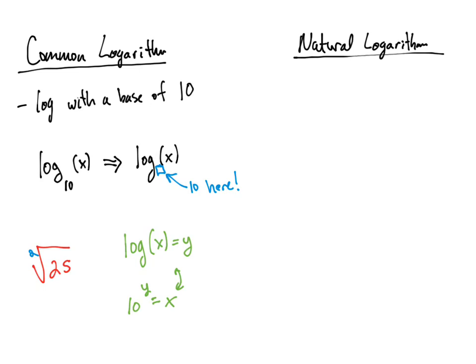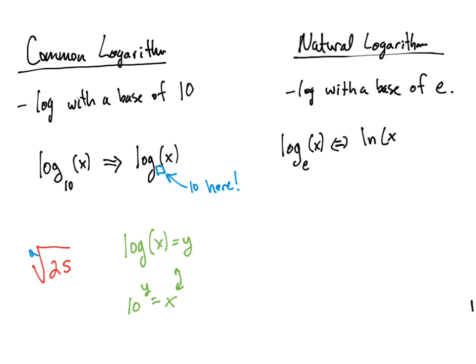The other special type is the natural logarithm, which is a log with a base of the number e. We write log base e of x as ln of x. So ln is shorthand for log base e. If we have ln of x equals y, that means e to the y equals x. The natural log is just a special case of the logarithmic function where the base is e.